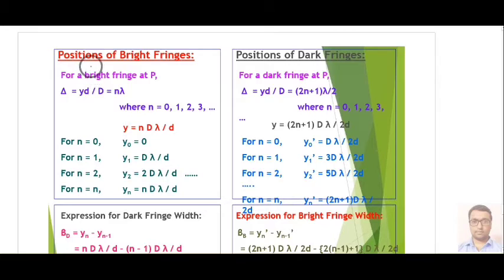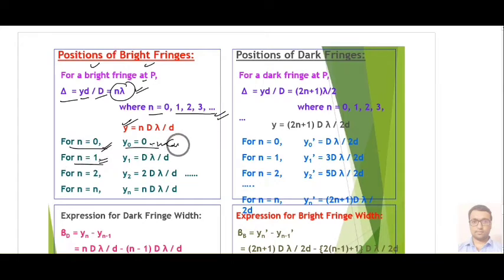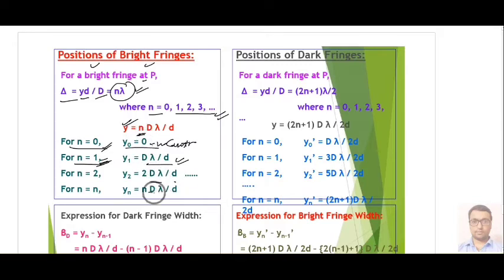For the position of a bright fringe, the path difference Yd/D must equal nλ, where n = 0, 1, 2, 3, etc. When n = 0 we get the central bright fringe at Y = 0. For the first bright fringe put n = 1, giving Y₁ = Dλ/d, and so on for any higher-order bright fringe.